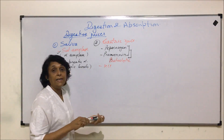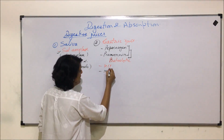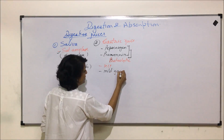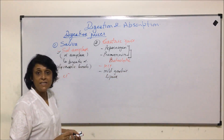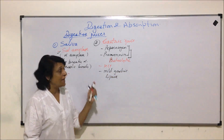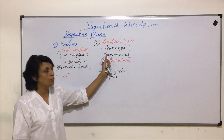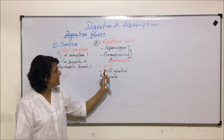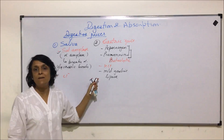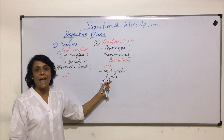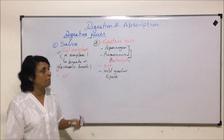In gastric juice, there is also a lipase, called mild gastric lipase, which is a fat-digesting enzyme. So in saliva there is a carbohydrate-digesting enzyme, while in gastric juice there are both protein-digesting and fat-digesting enzymes. This fat-digesting enzyme is very mild because its action does not take place at the low, acidic pH of the stomach.